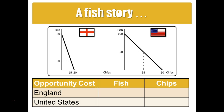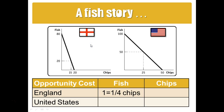If we look at the opportunity cost to England of producing fish, it's expressed in terms of what they're giving up. The opportunity cost for England of producing fish is how many chips per fish they lose. England's opportunity cost is 20 chips per 80 fish — since we have a linear production curve, we just take the two extreme points and divide. So England is giving up one quarter chip per fish.